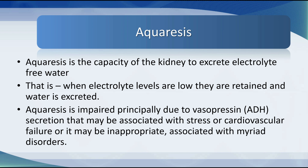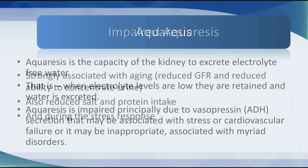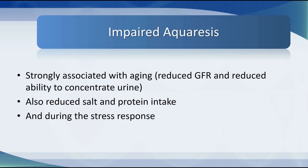Impaired aquaresis is strongly associated with aging, where there is a reduced glomerular filtration rate and reduced ability to concentrate urine, but also reduced salt and protein intake. As people get older they often don't consume enough protein. We also see impaired aquaresis during the stress response, where water is held onto because of antidiuretic hormone production as part of the fight-or-flight response.